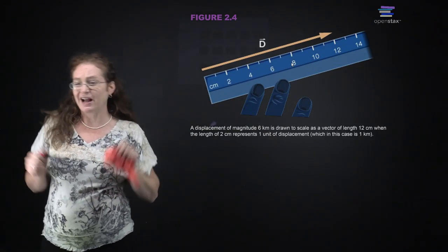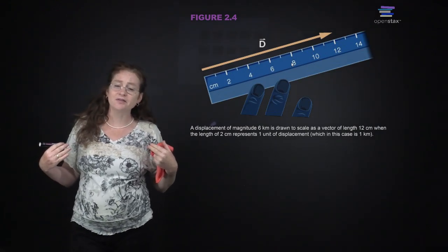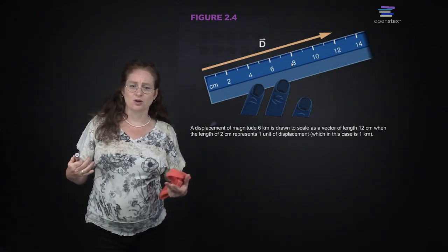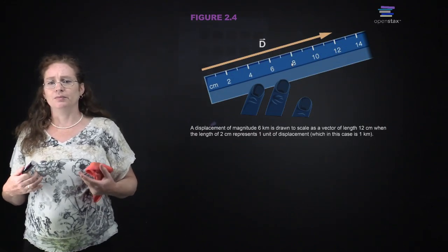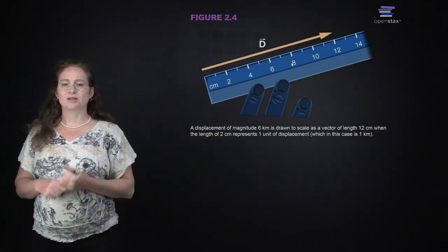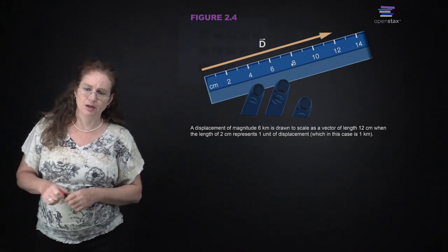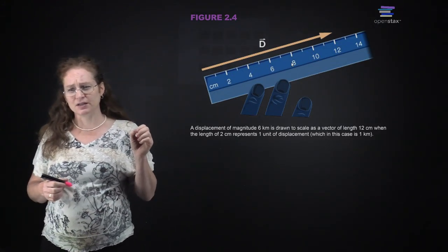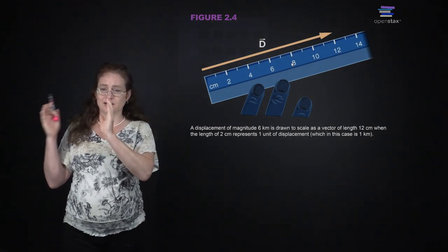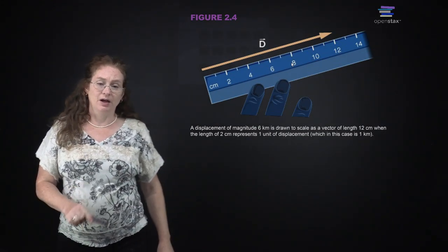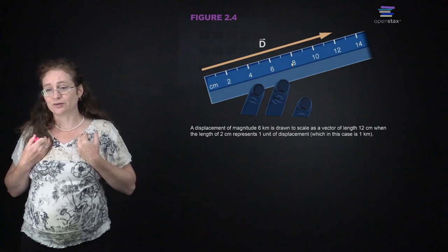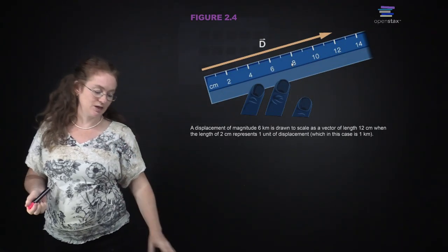Sometimes we're going to draw these rough. It actually helps, even when you're not working on something quantitative, if you get in the habit of drawing things roughly to scale, because it's going to give you a better understanding of what's going on. If you're going to draw a displacement of six kilometers to scale, you might use two centimeters per kilometer. In physics we're often just drawing sketches, and it really matters that it's qualitatively the right length - six kilometers should be about twice as long as three kilometers.